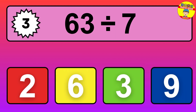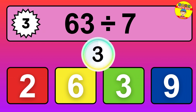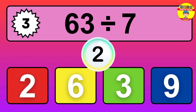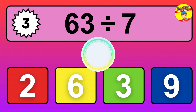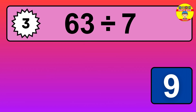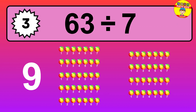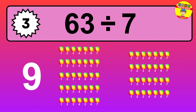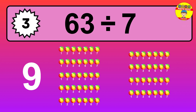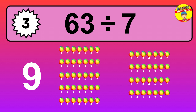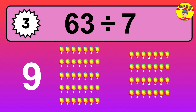63 divided by 7 is... time to think. Let's go to the solution. Divide the number 63 by 7. Each group contains 7 units, so dividing 63 by 7 results in 9 equal groups. Thus, the result is: 63 divided by 7 equals 9.